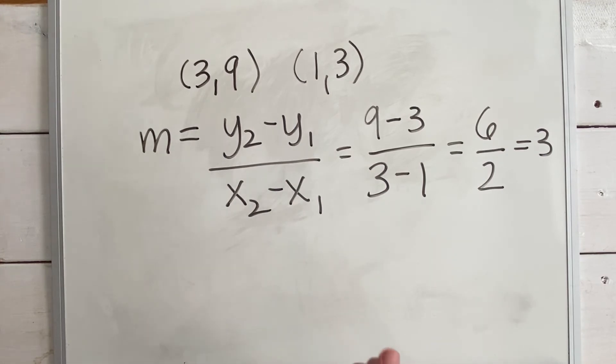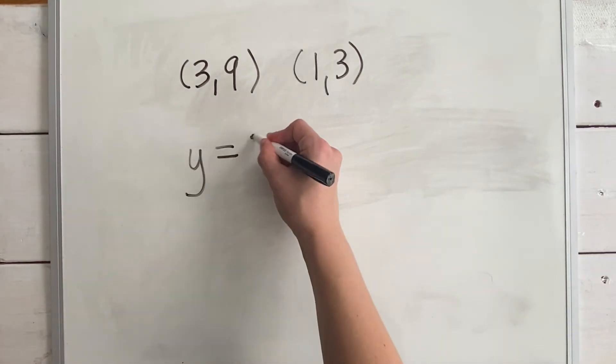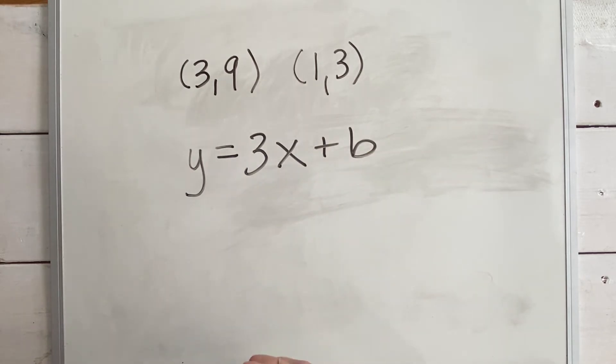Now that we have the slope, we can start making our equation more specific. y equals three x plus b. In place of the m, we've now put our three, which we know is the slope of this line.